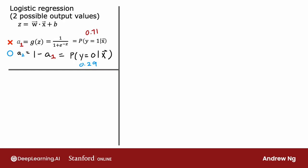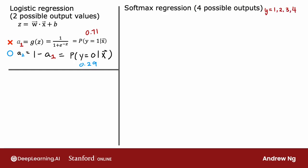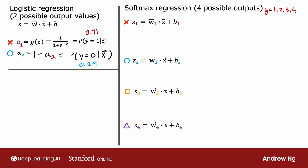Let's now generalize this to softmax regression, with a concrete example where y can take on four possible outputs: 1, 2, 3, or 4. Softmax regression will compute z1 as w1 dot product of x plus b1, and z2 equals w2 dot product of x plus b2, and so on for z3 and z4. Here, w1, w2, w3, w4, as well as b1, b2, b3, b4, are the parameters of softmax regression.